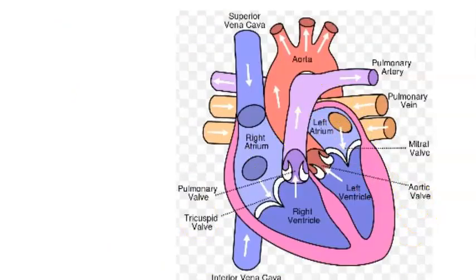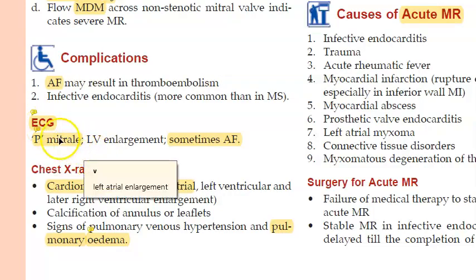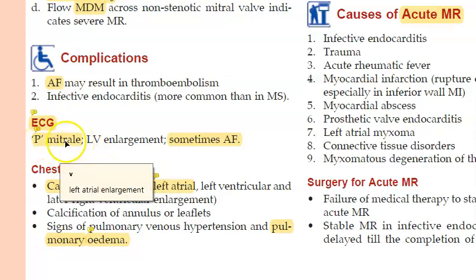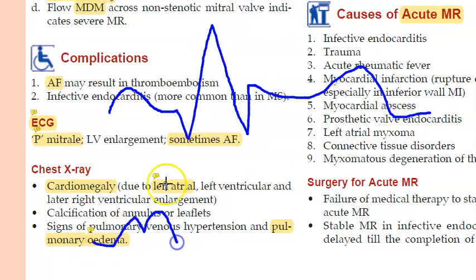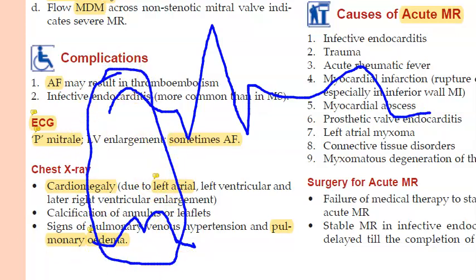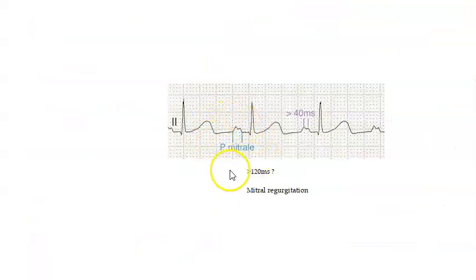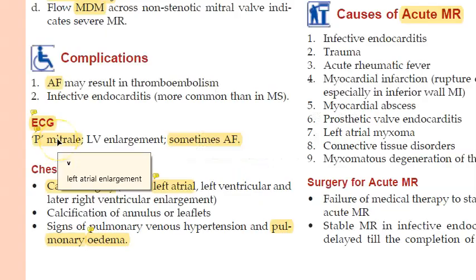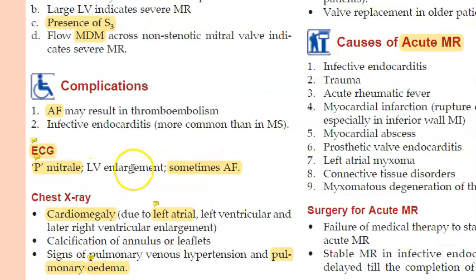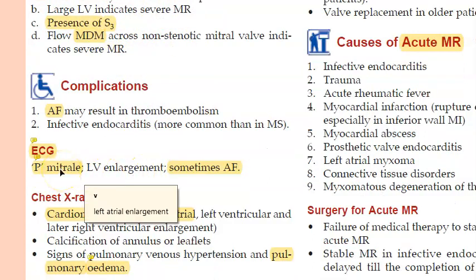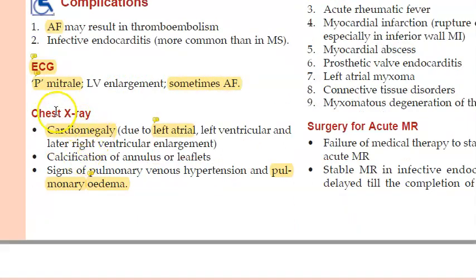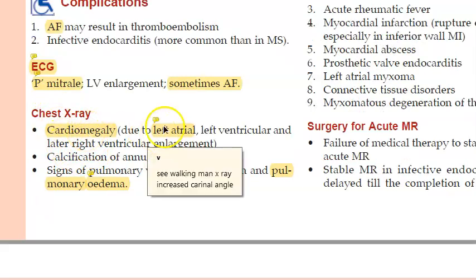Atrial fibrillation is a complication of MR. On ECG you will see P mitral — a broad, notched P wave shaped like an 'M' due to left atrial enlargement. Left ventricular enlargement indicates severe MR. The first structure affected is the left atrium, which can lead to atrial fibrillation.